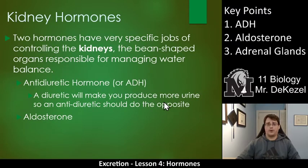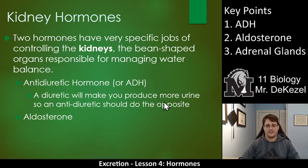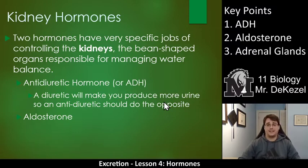Kidney hormones. We have two specific hormones that we're going to talk about that are produced near or at the kidneys. There are many, many more — there are tons of hormones — but these are two main ones we're going to focus on. Kidneys are bean-shaped organs that are responsible for not only excreting waste, but managing water balance. And that's what these hormones are going to focus on.